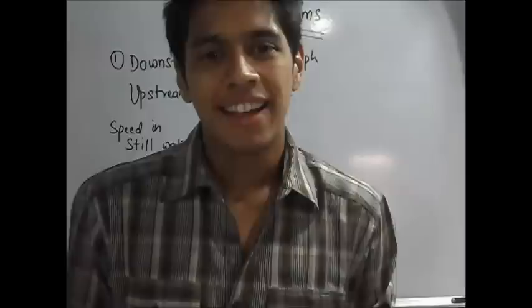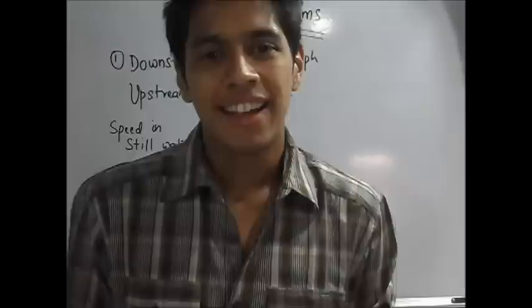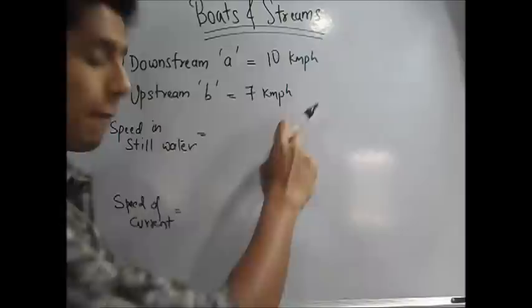Let us go on and solve a simple problem. Problem 1. A man can row upstream at 7 km per hour and downstream at 10 km per hour. Find the man's rate in still water and the rate of the current. This is a comparatively easy problem. They have given you that the downstream a is 10 km per hour and upstream b is 7 km per hour.